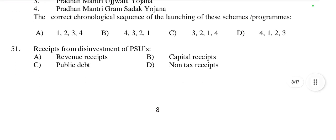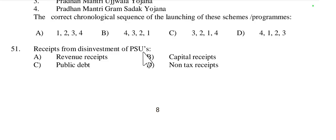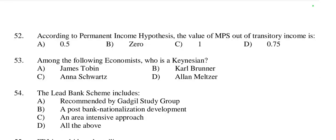Question 51: Receipts from disinvestment of public sector undertakings — is it revenue receipt, capital receipt, public debt, or non-tax receipt? It is called a capital receipt because it involves the sale of government assets, which is a one-time inflow, as opposed to revenue receipts derived from regular income sources like taxes. So option B — capital receipt — is right.